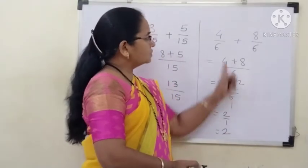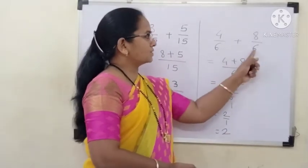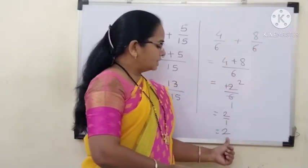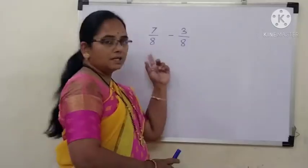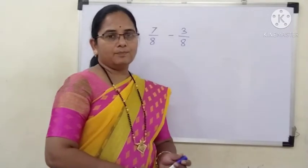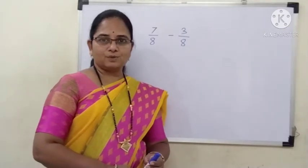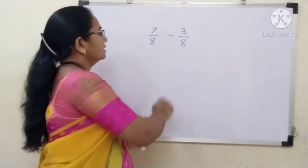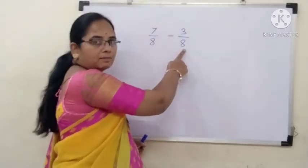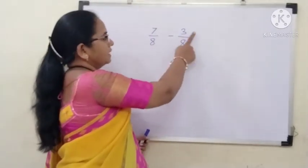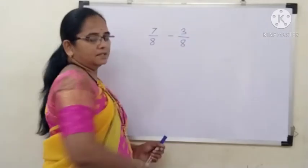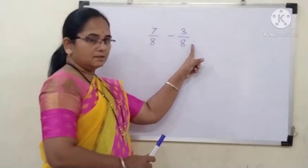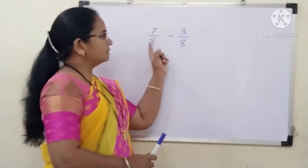So the value of the addition of these 2 fractions, 4 by 6 and 8 by 6, is 2. Now let us solve a sum that is the subtraction of 2 fractional numbers. Here we are having 2 fractional numbers: 7 by 8 and 3 by 8. We need to subtract 3 by 8 from 7 by 8.